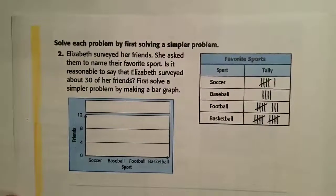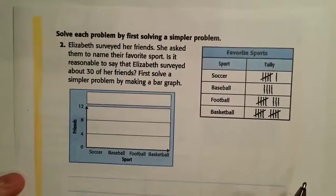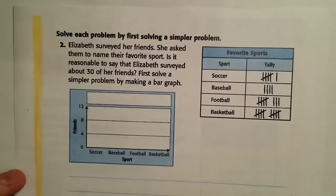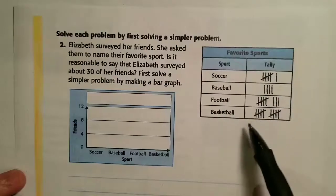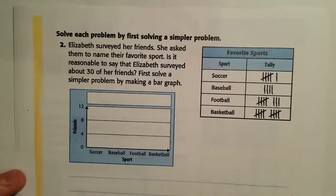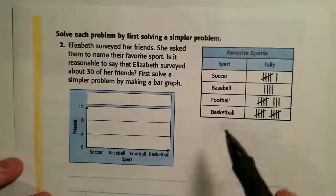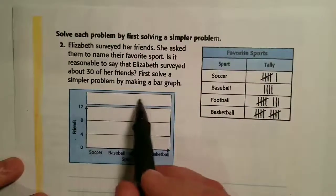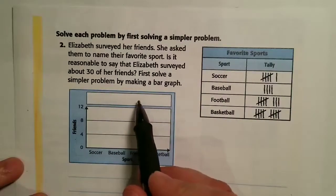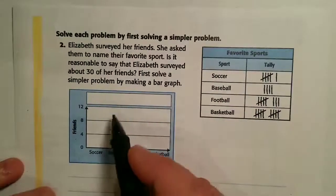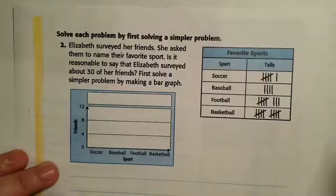For this section we have to solve each problem by first solving a simpler problem. Number two says that Elizabeth surveyed her friends — she asked them to name their favorite sport and put a tally chart here. Is it reasonable to say that Elizabeth surveyed about 30 of her friends? First, solve a simpler problem by making a bar graph. So we're going to say the title is 'Favorite Sports.'